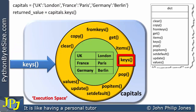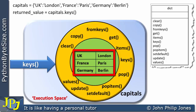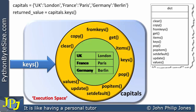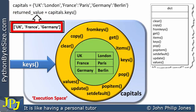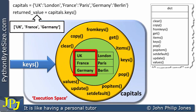This method is going to look at the key-value pairs and examine the keys in particular. It will extract a copy of those keys from the three items and return them — you can see the animation showing those being returned. What's returned is a list: UK, France, and Germany, exactly as they appeared in the program statement.